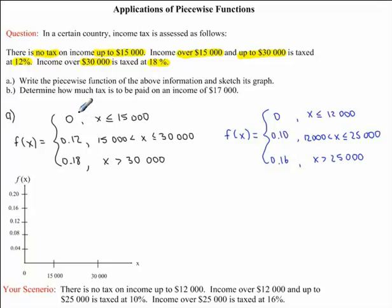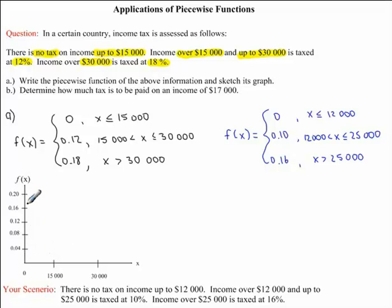Looking at our first interval, we know that f of x is equal to 0 when x is less than or equal to $15,000. So at x equals $15,000, we need anything less than this — between 0 and $15,000 — where our f of x value is equal to 0. Our first interval will occur along this line. These closed circles indicate that x can equal $15,000 as well as 0.